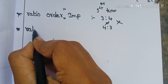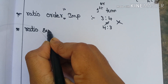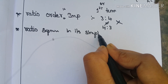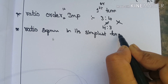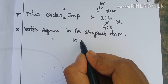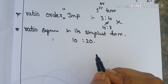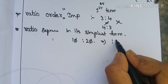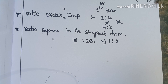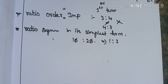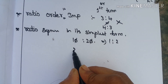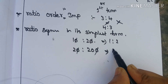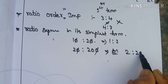The ratio is expressed in its simplest form. The simplest form means: suppose 10 is to 20 as the ratio — we simplify it. Another example: 20 is to 200. If you cancel out, the answer is 2 is to 20.